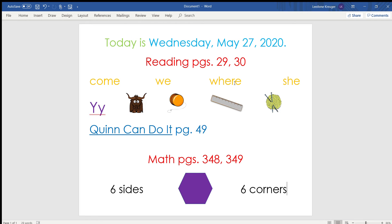And for math, you have two pages, page 348 and 349, and you'll continue working with the hexagon, which has six sides and six corners. I like page 349. I think you could really make something pretty cool on that page.